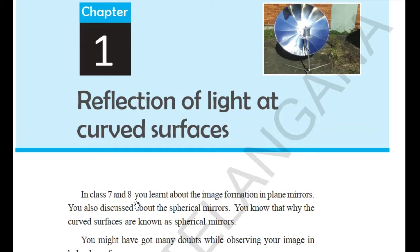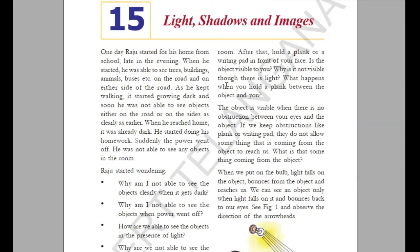In the previous class we have learnt a lot, which will be helpful to recall your knowledge and understand this chapter. In the sixth class, seventh class, and eighth class, reflection of light at the plain surface was covered. We will start from the sixth class. In the sixth class textbook, the fifteenth chapter is 'Light, Shadow and Images', where you learn about light and related concepts.